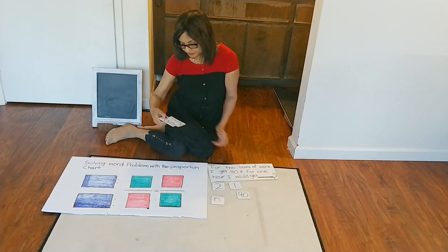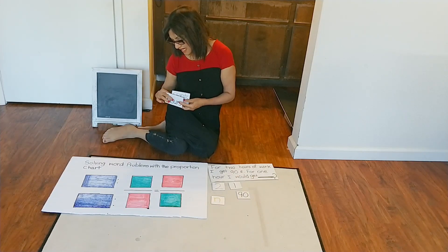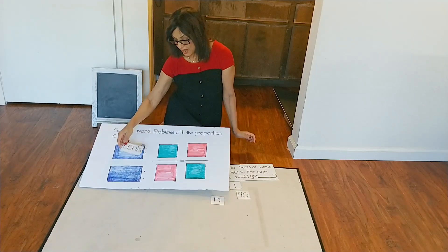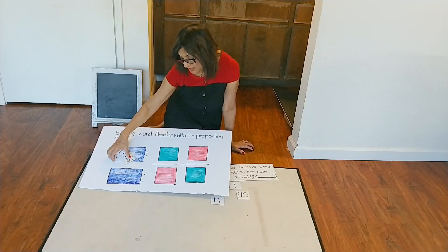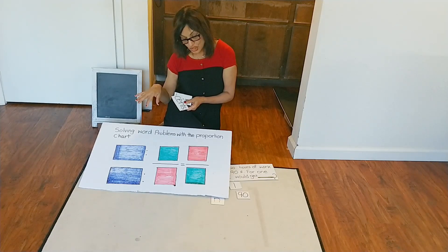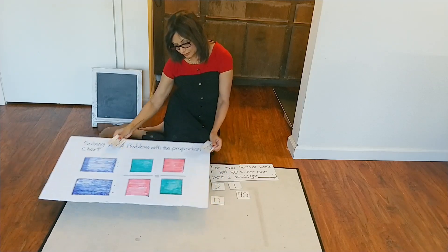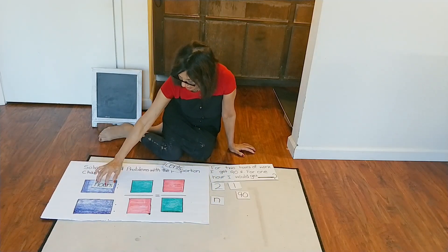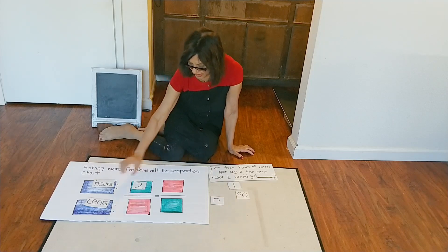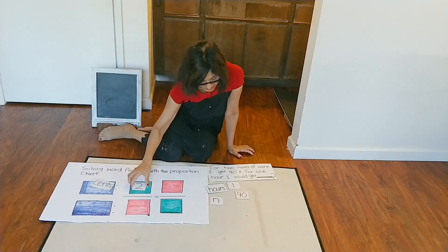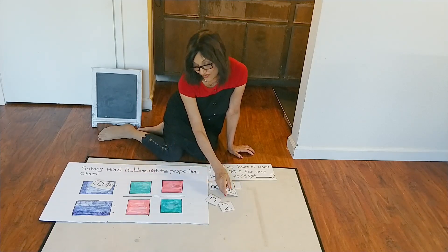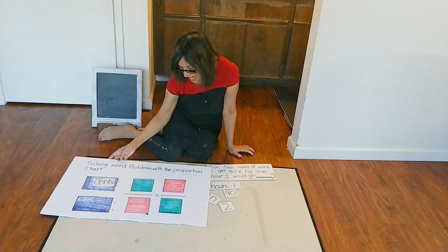I wrote hours here and cents here on the proportion chart. I am going to place them right here. One important thing — it does not matter what goes at the bottom and what goes at the top. It doesn't matter at all. So if I put hours here, then we need to put hours here too. If I put cents here, then I need to put cents here as well. That is actually very important to solve this math problem.